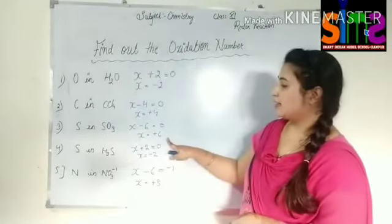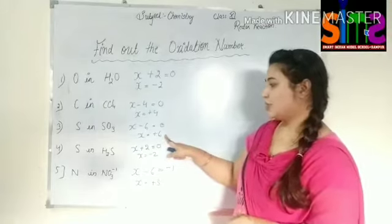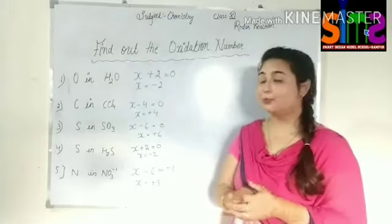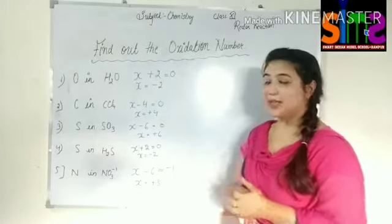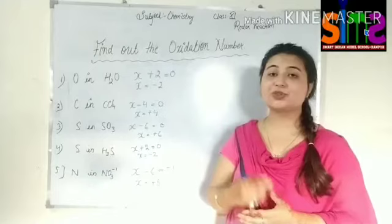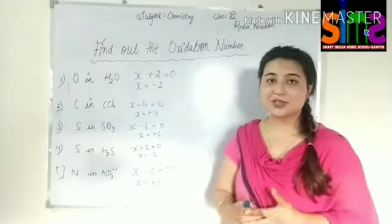Sulfur in SO₃ — sulfur trioxide — shows plus 6 oxidation. This means that sulfur in compounds like SO₃ and H₂S shows a variable oxidation state.